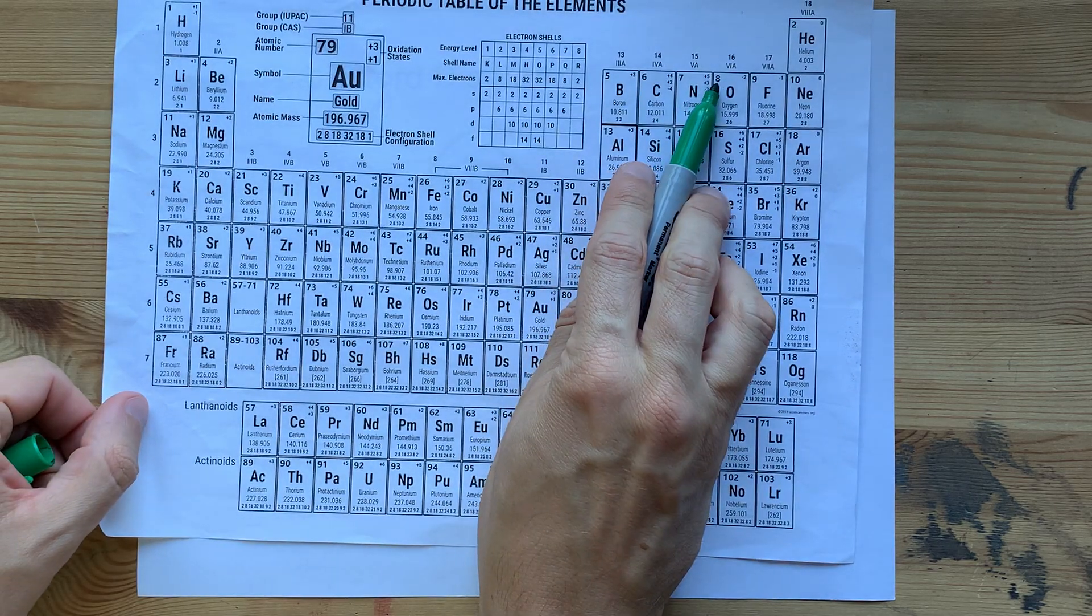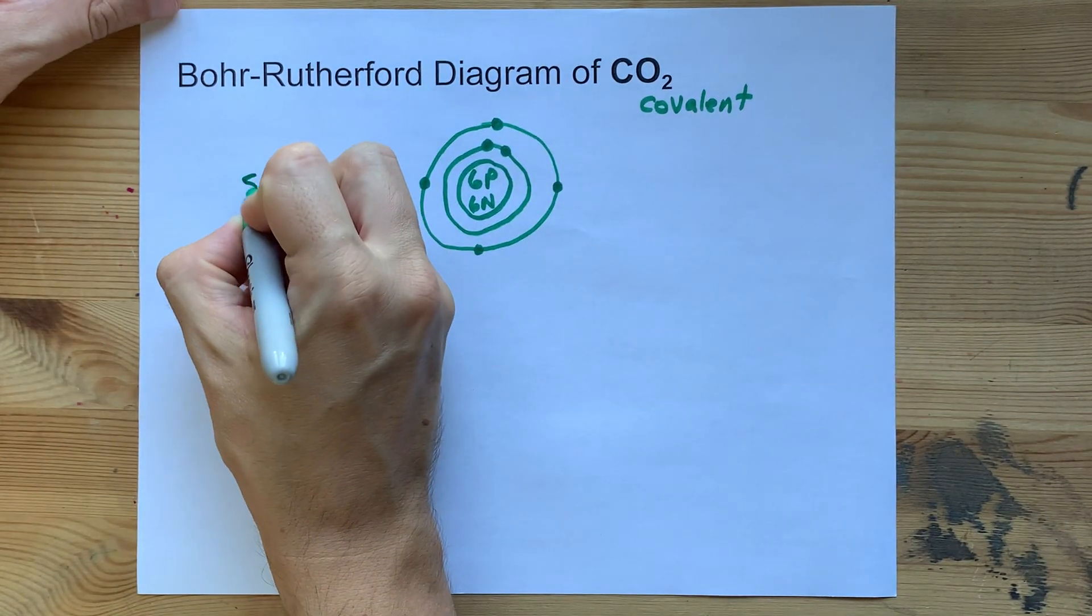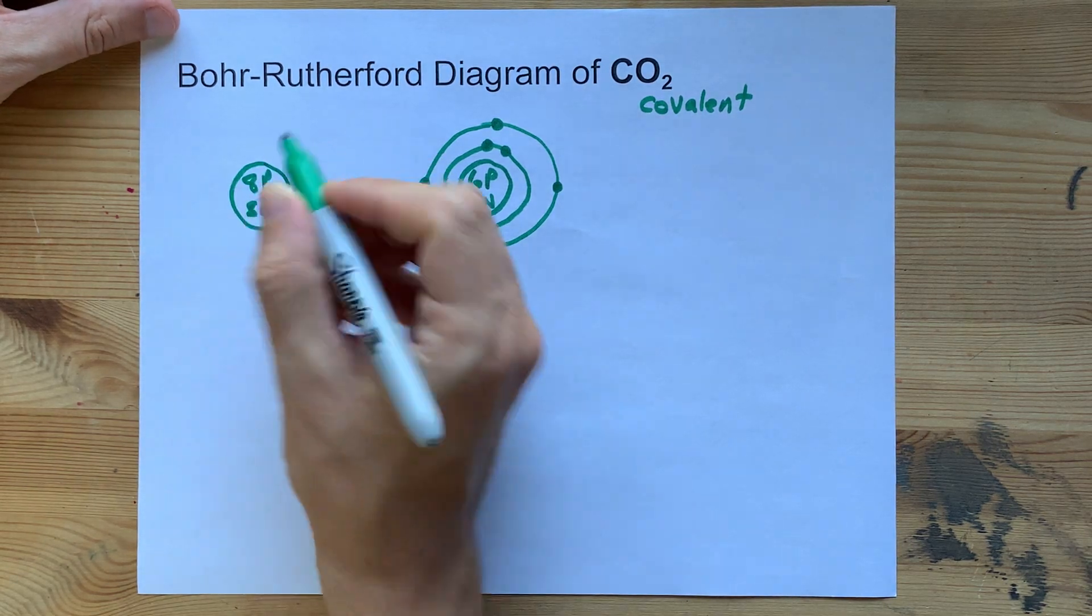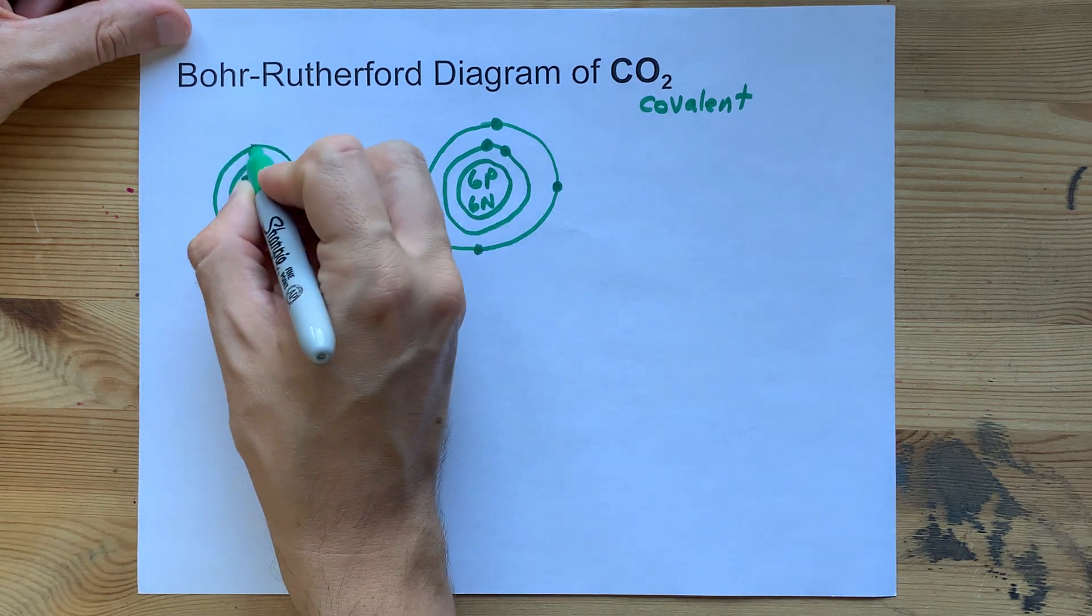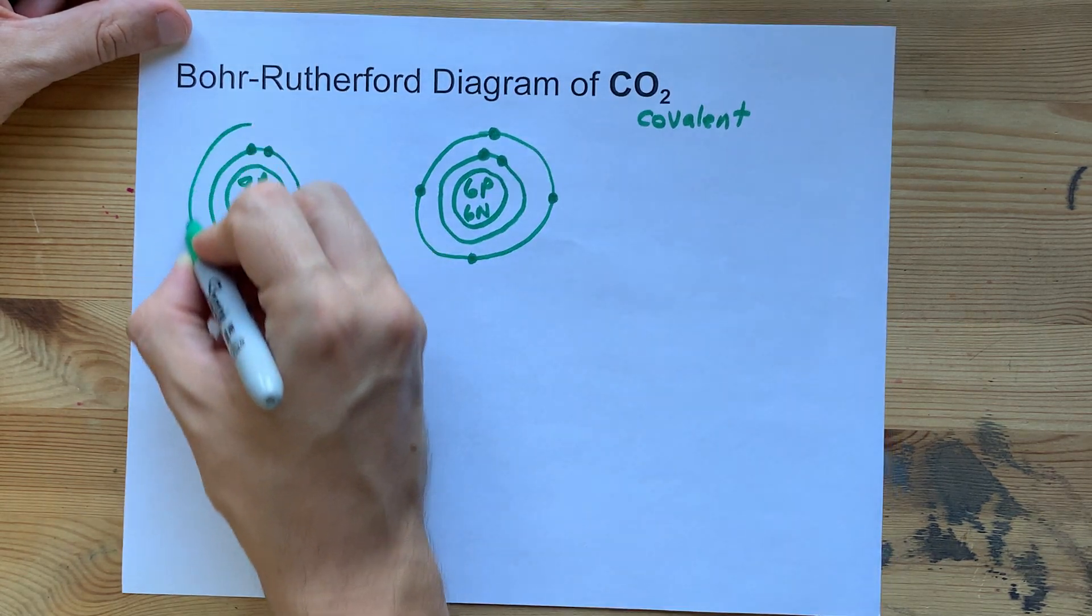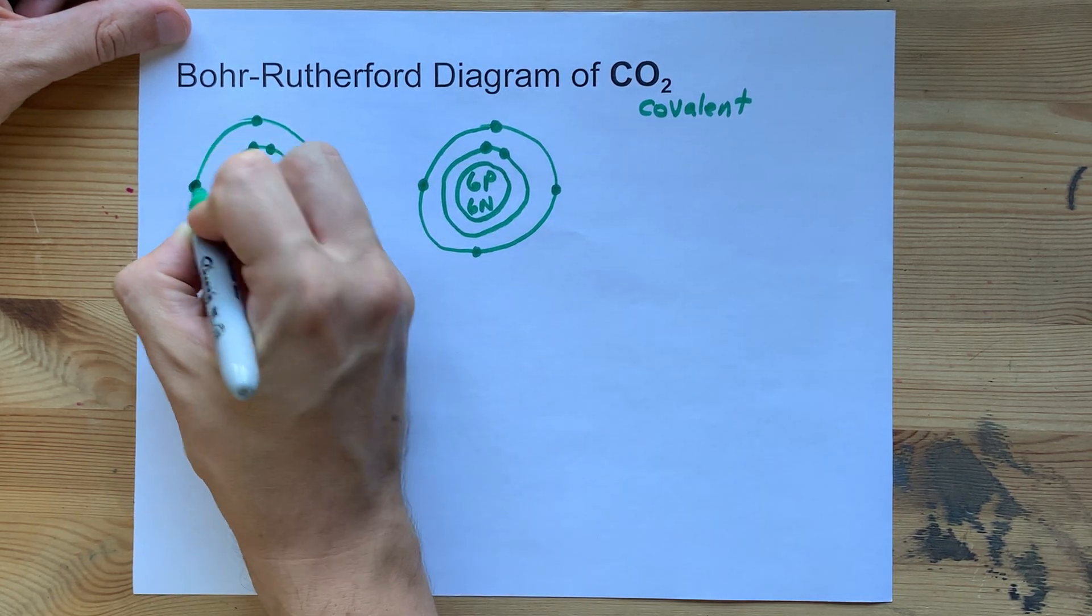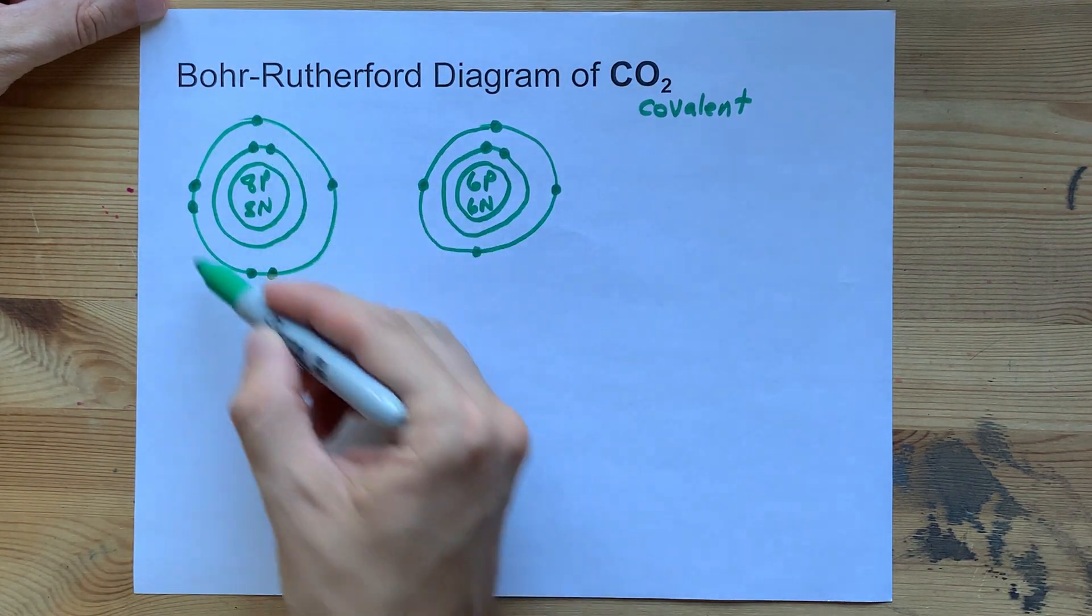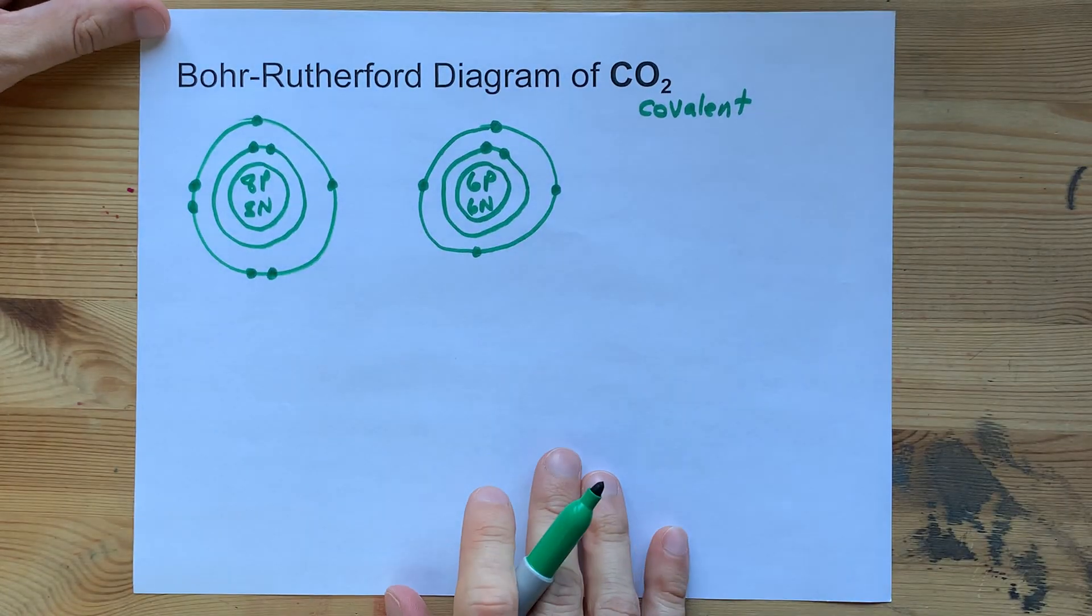Oxygen is element number eight. That's eight protons. Mass 16, 16 minus eight is eight neutrons. So each oxygen has eight protons and eight neutrons in its nucleus. It will need eight electrons when it's neutral. That's two in the first shell and six in the second shell: one, two, three, four, five, six. Notice I spread them out before I doubled them up. That's a grade 12 thing. Don't worry about it if you're not there yet.